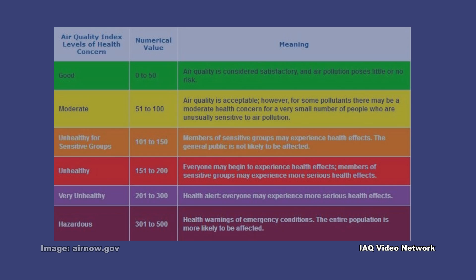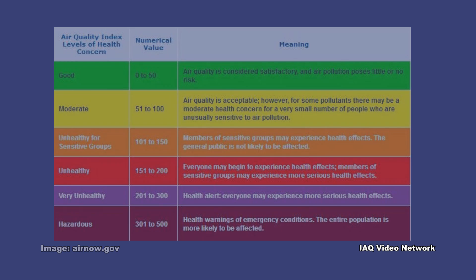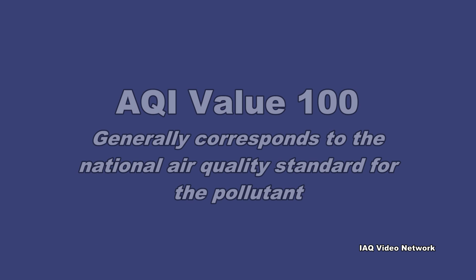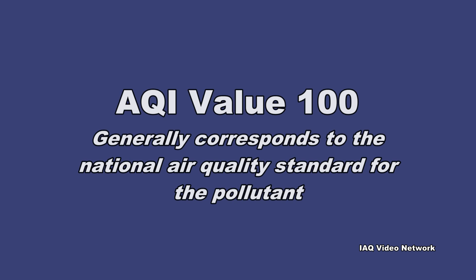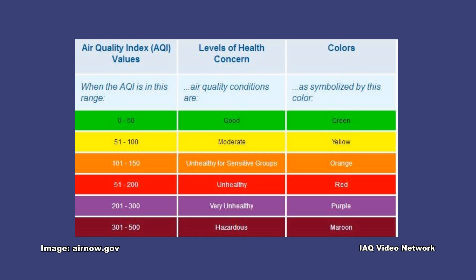To make it easy to understand, the AQI is divided into six levels of health concern. An AQI value of 100 generally corresponds to the National Air Quality Standard for the pollutant, which is the level the EPA has set to protect public health. The higher the AQI value, the greater the level of air pollution, and the greater the health concern.